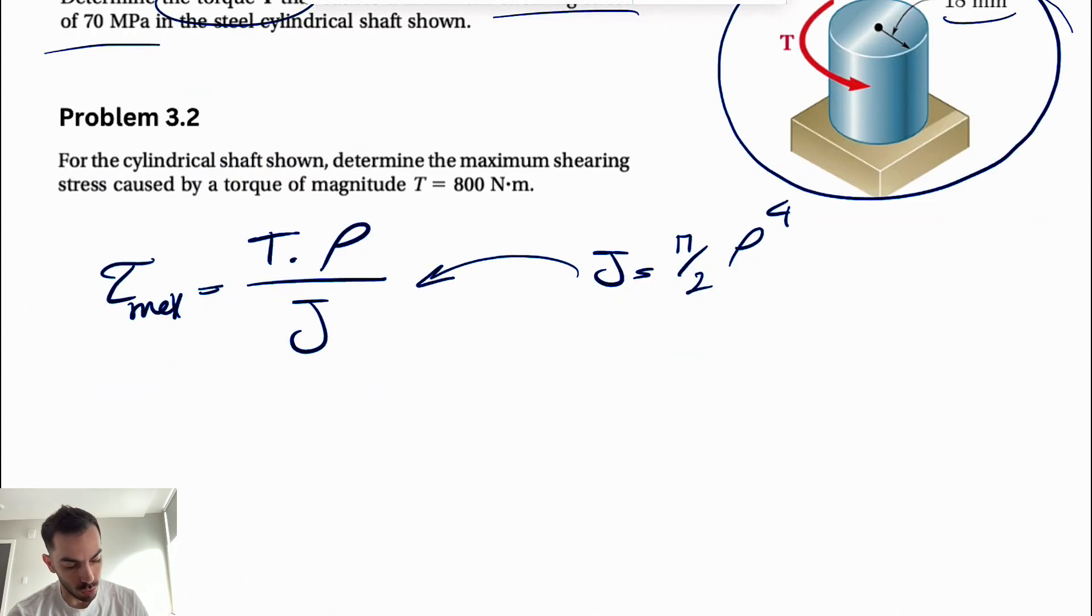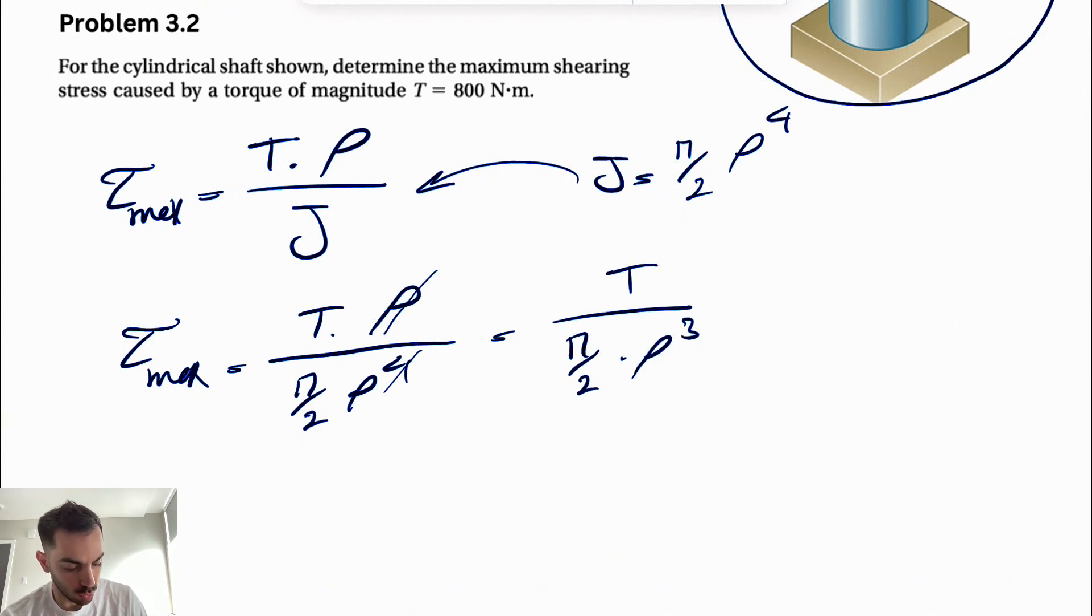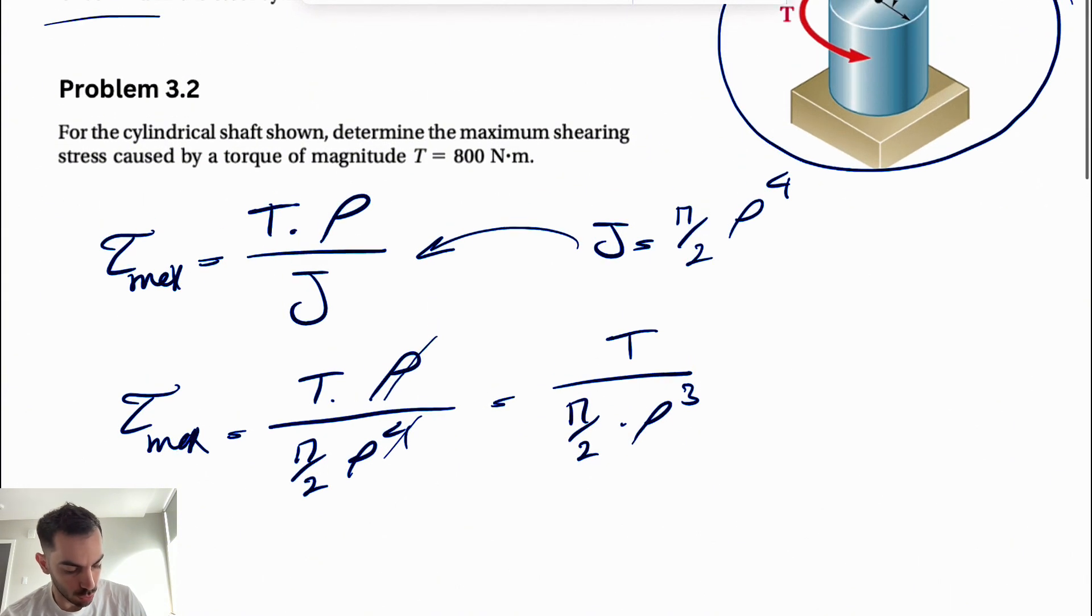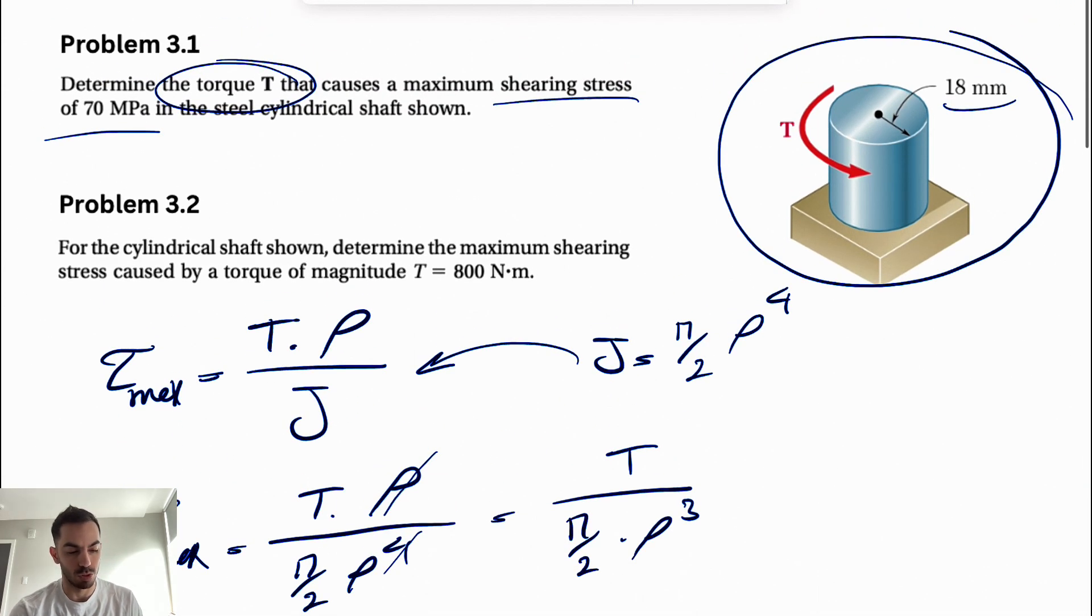If we substitute J into the formula, our maximum shearing stress becomes T·ρ divided by π/2·ρ⁴. We can cancel one ρ, so we end up with T/(π/2·ρ³), where ρ is the radius which we know is 18 millimeters.